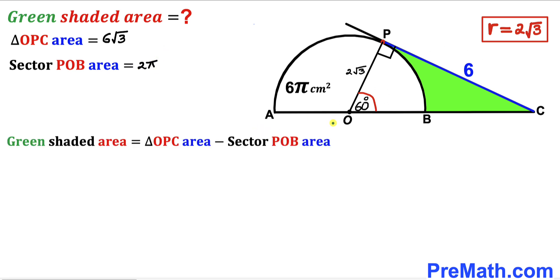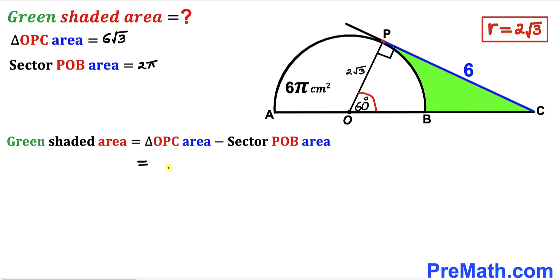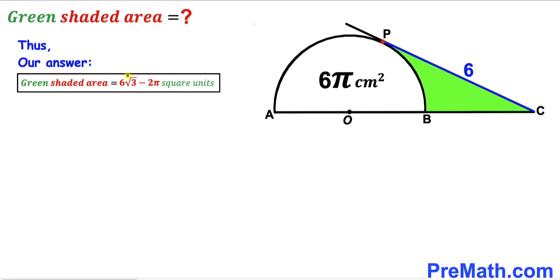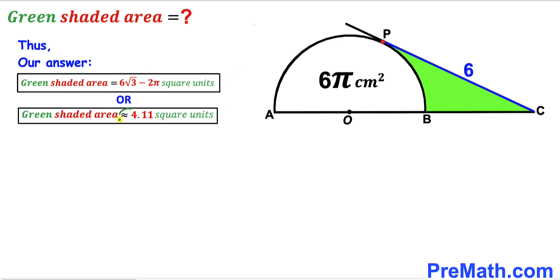Putting it all together: green shaded area = triangle OPC area − sector POB area = 6√3 − 2π square units, which is approximately 4.11 square units. That's our final answer. Thanks for watching and please don't forget to subscribe to my channel for more exciting videos!